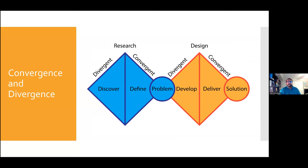Yet another way of viewing this process is through convergence and divergence. This graphic is what's called the double diamond process, and you're moving left to right. You start with a divergent process of discovery, where you come up with lots of ideas, and then a convergent process of definition, where you converge on the specific aspects of the problem that your solution can solve. After that you move to the design phase — the divergent part is developing lots of designs to understand the best solutions, and then you deliver on one of those solutions. So you diverge, come up with a whole bunch of ideas, then converge back to one problem, one solution.